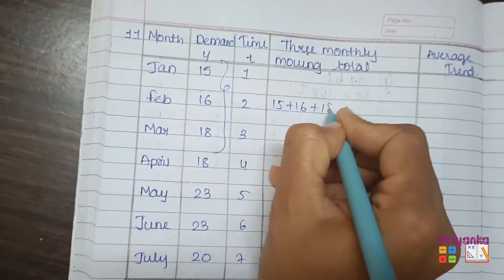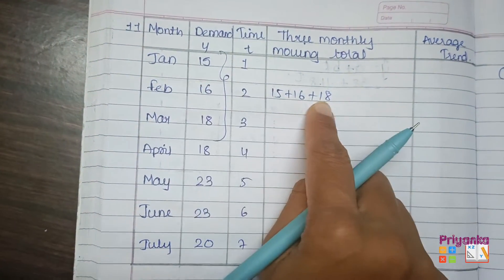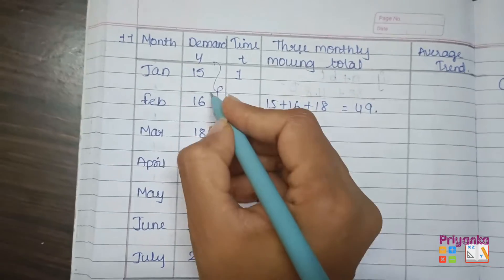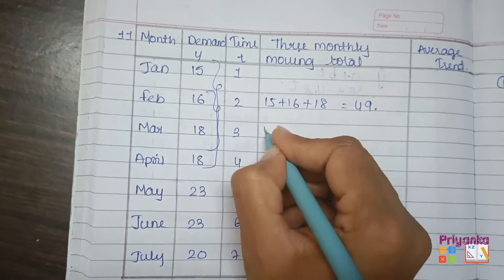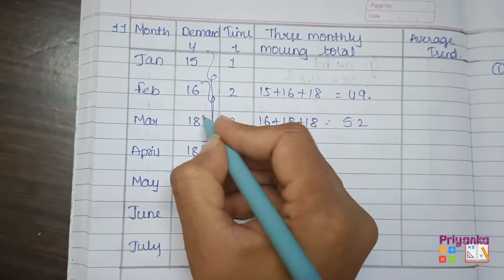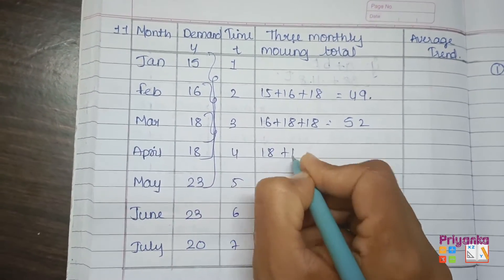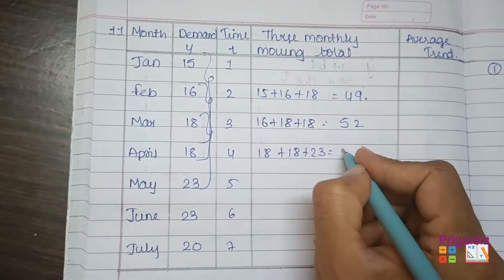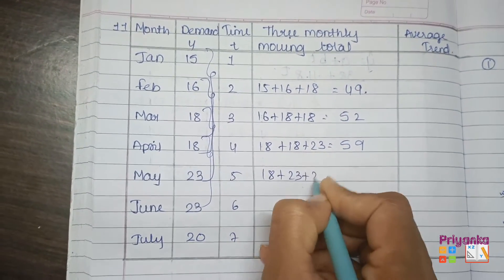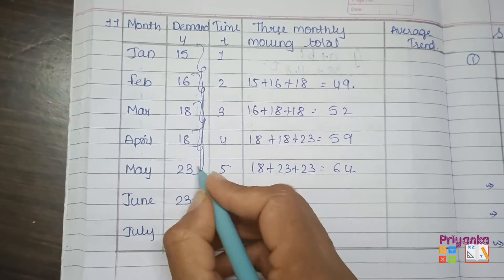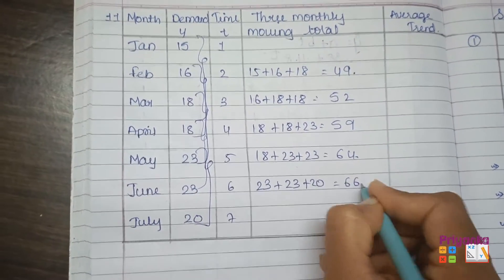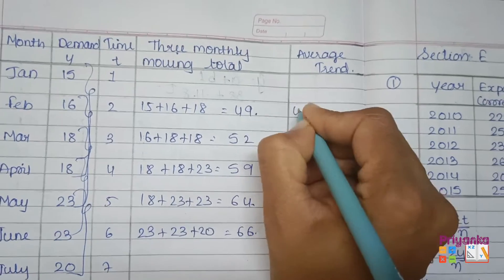That is 15 plus 16 plus 18, the total of this we get 49. Next three set will be 16 plus 18 plus 18, the total is 52. Next three set: 18 plus 18 plus 23, here we get 59. The next three set is 18 plus 23 plus 23, here we get 64. The last three set: 23 plus 23 plus 20, and the answer is 66.